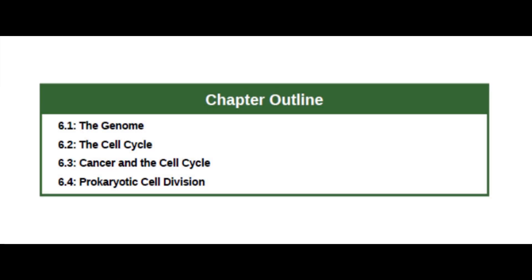Chapter Outline: Section 6.1 The Genome, Section 6.2 The Cell Cycle, Section 6.3 Cancer and the Cell Cycle, and Section 6.4 Prokaryotic Cell Division.